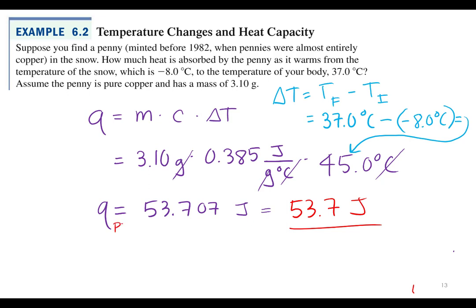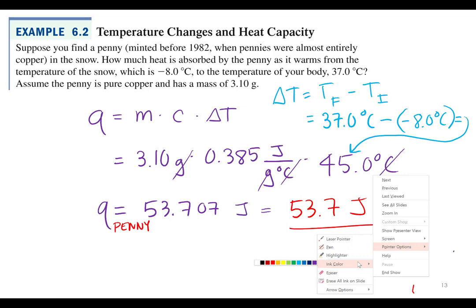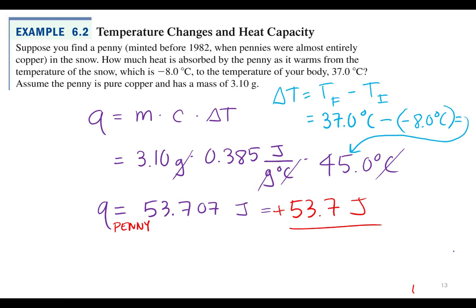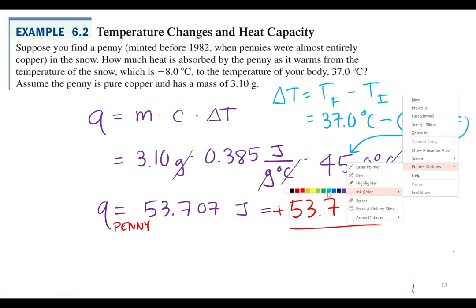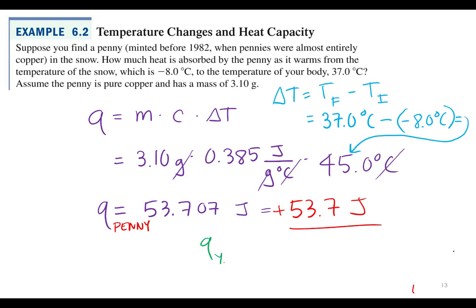So that's Q. That's Q of the penny. And of course, what sign is that 53.7? Plus. So what would be the Q of you? You picked up the penny. Q of the penny is plus 53.7. What's that mean? What happened to the penny? The penny gained 53.7 joules of energy. Where did that energy come from? You. So what's the Q of you? Negative 53.7 joules. So you lost 53.7 joules of energy picking up that penny.